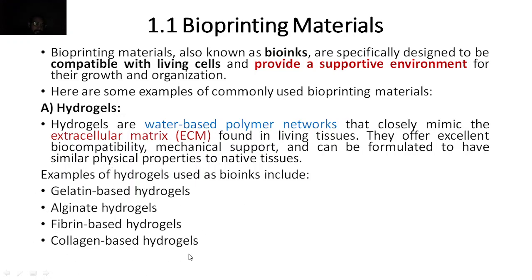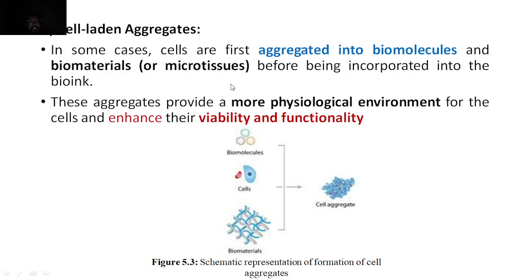The next material is cell-laden aggregates. In some cases, cells are first aggregated — they combine together into a biomolecule, biomaterial, or microtissue before being incorporated into a bioink. So first, cells form a biomaterial or micro-tissue before you even incorporate them into the bioink for printing applications.